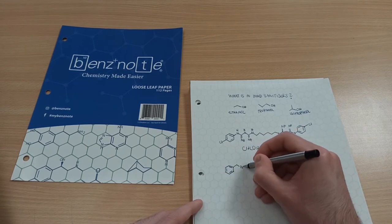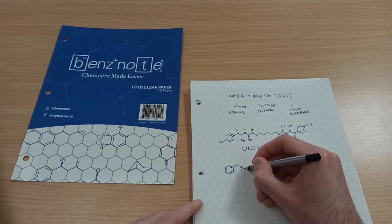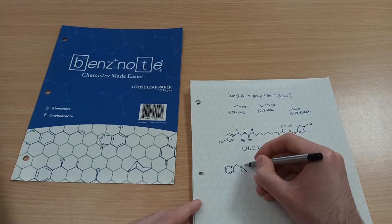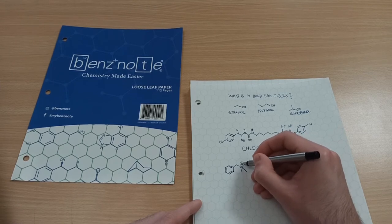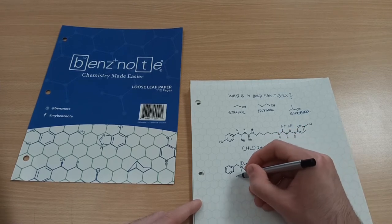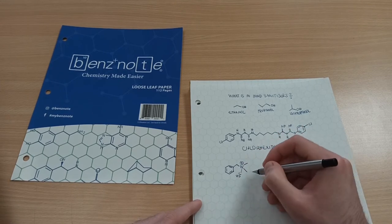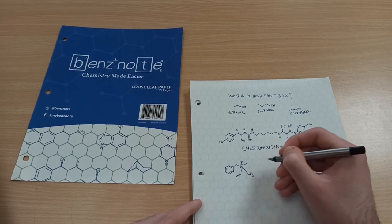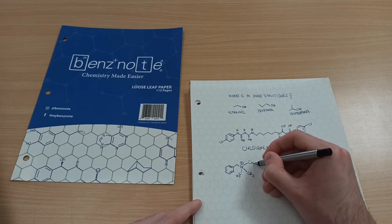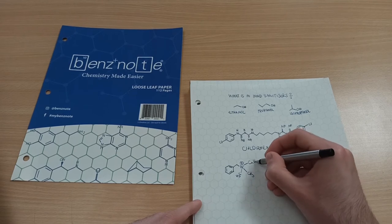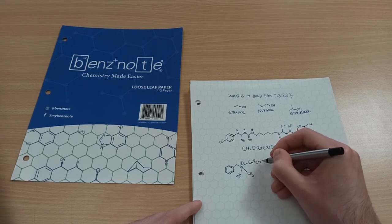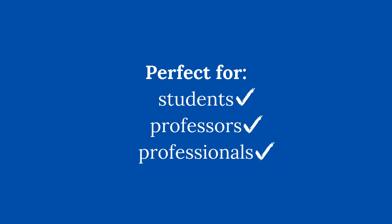You'll be able to quickly and more accurately draw out structures while taking class notes or completing homework. Use Ben's Notes' loose leaf version if you prefer using a three-ring binder. Perfect for students, professors, and professionals.